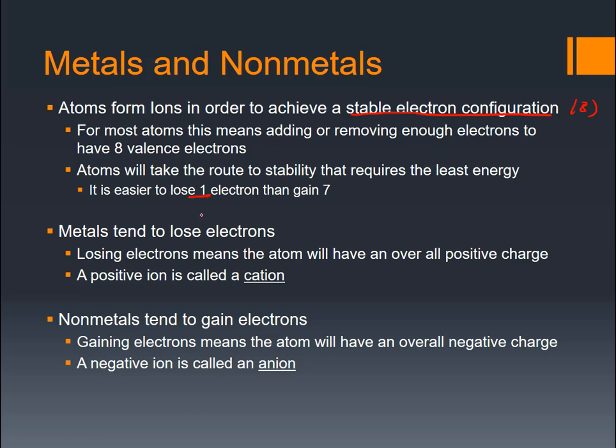Metals tend to have one or two or three electrons. Well, it's easier to lose one or two or three electrons than to gain five, six, or seven. Since it takes less energy to give up an electron than to pull in lots of electrons, metals tend to lose electrons. And since they're losing electrons, they have a positive charge. So metals form positive ions. And a positive ion is called a cation.